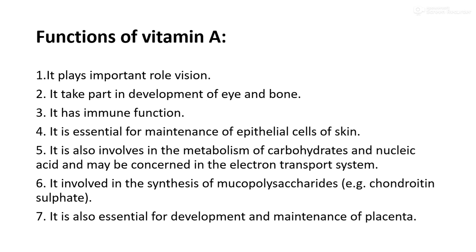Now let us look at the functions of Vitamin A. This is a fat soluble vitamin. First, it plays an important role in vision. Second, it takes part in development of the eye and bone, and it has immune function — meaning this vitamin is very important for our immune system. It is essential for maintenance of epithelial cells of the skin. It is also involved in the metabolism of carbohydrates and nucleic acid, and may be concerned in the electron transport system. It is also involved in the synthesis of mucopolysaccharides, for example chondroitin sulfate. It is also essential for development and maintenance of the placenta.